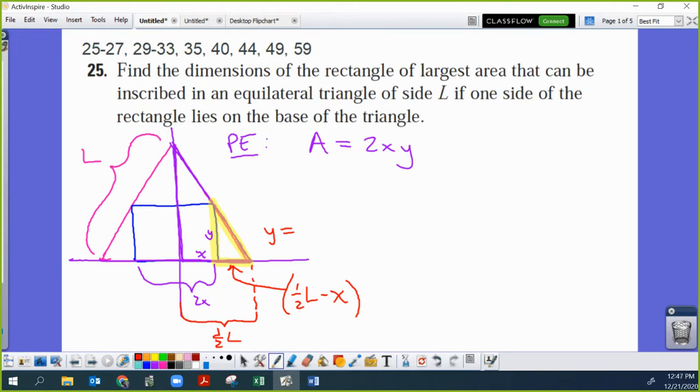One half L minus X equals L times the square root of three? I would say... It's actually the one half L minus X times the square root of three is going to equal the Y. Does that make sense? The short leg times square root of three equals the long leg in a 30, 60, 90, right? So Y is going to equal square root of three times one half L minus X. And I would go ahead and distribute that in there and then substitute it into the equation.